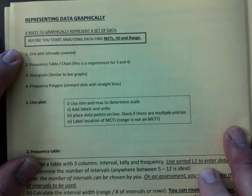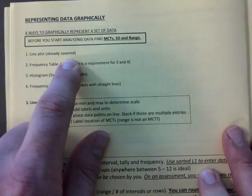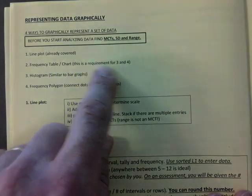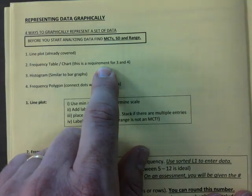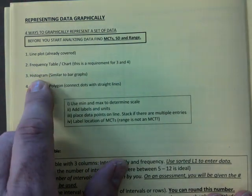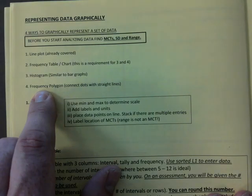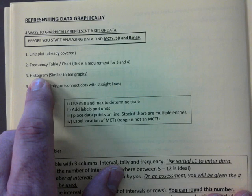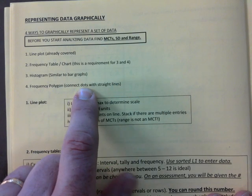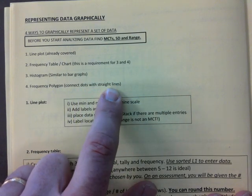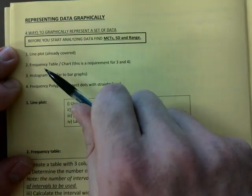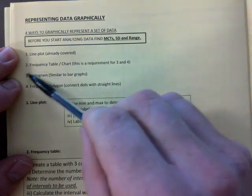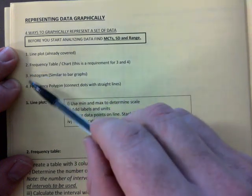Those are metrics to have before you start. Line plot we have already covered. Frequency table, this is a requirement for the next two that follow. So a frequency table, and then we'll do histogram and frequency polygon. So it's basically your bar graph and your frequency polygon is just connecting dots with straight lines. So you need this in order to come up with these two. The good news is that both of them can be done on the same grid.